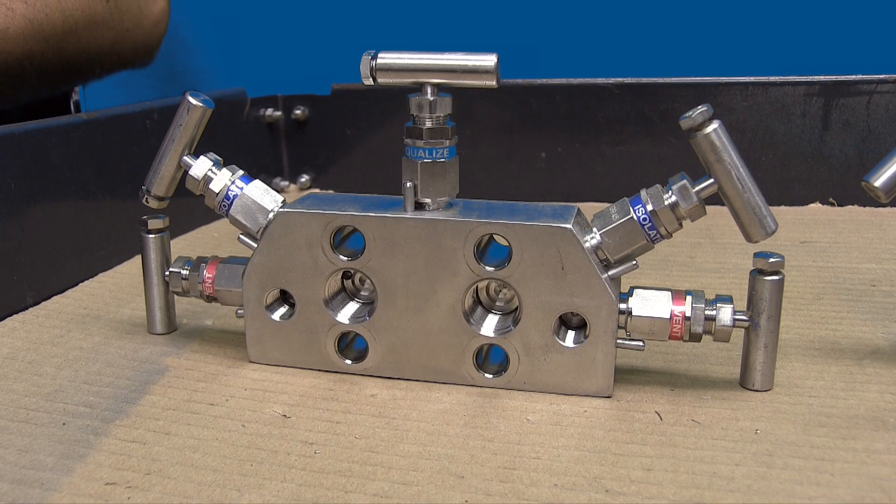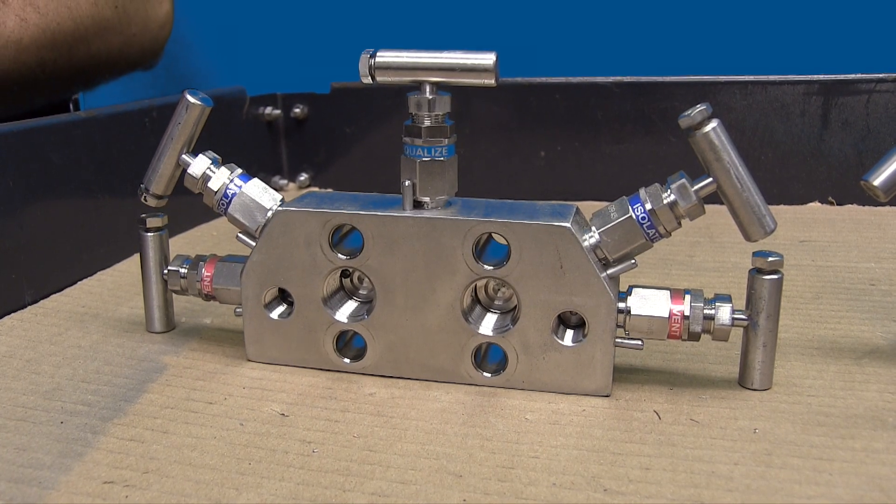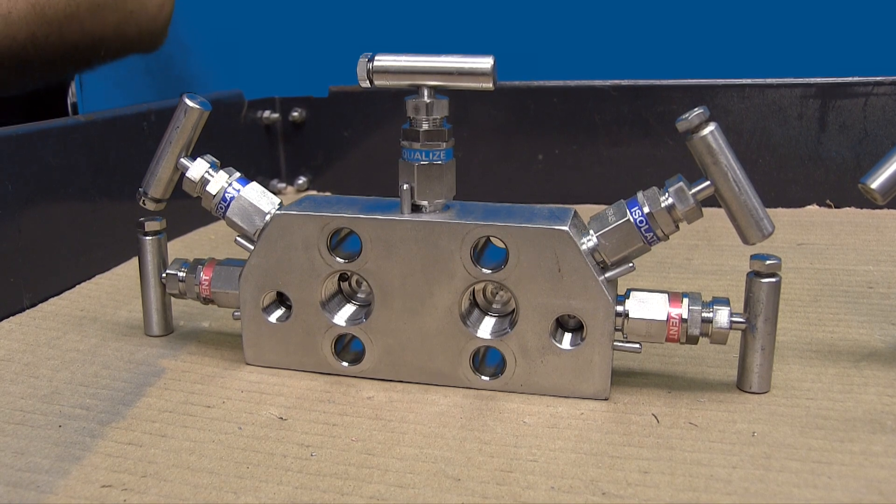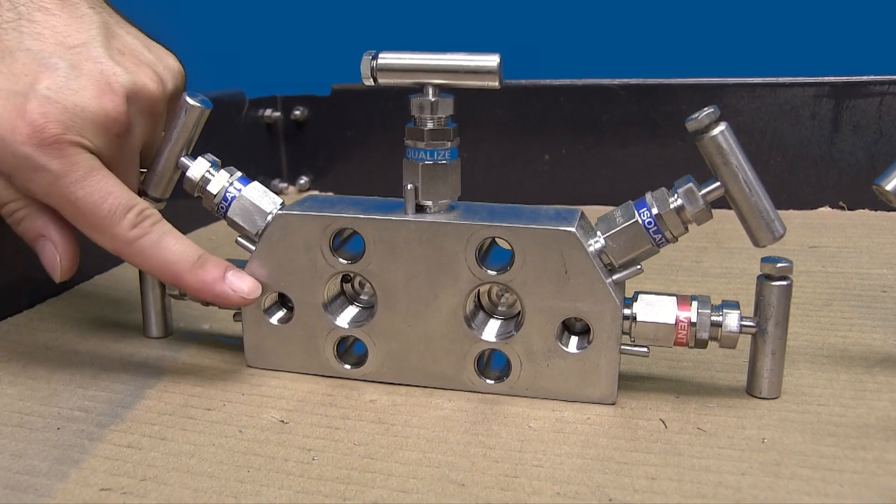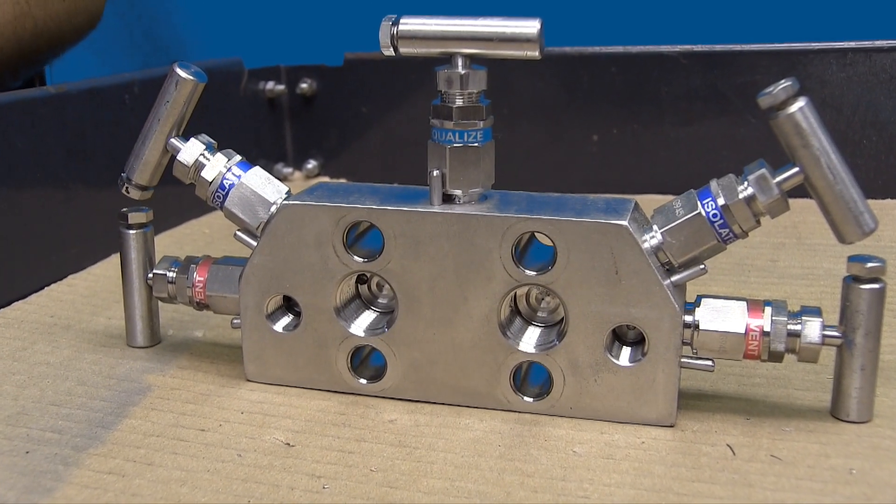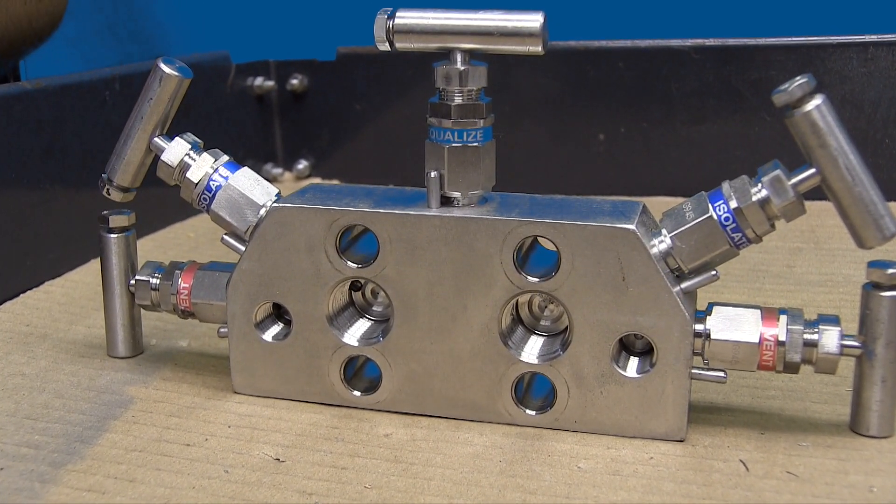Five-valve manifolds are also used on differential setups and provide the ability to block, equalize, and vent two process connections. The five-valve manifold has quarter-inch connections on each process connection that are usually plugged but could be ported out to some other indicator or transmitter for simultaneous operation or measurement.